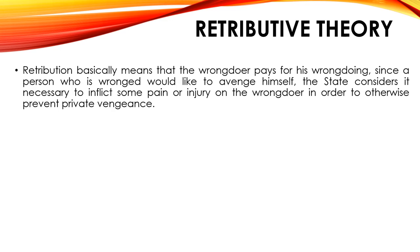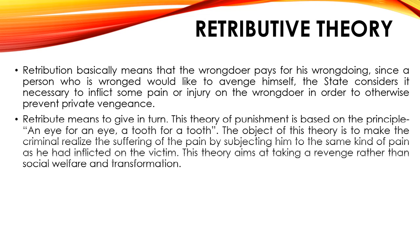The second theory is retributive theory. Retribution basically means that the wrongdoer pays for his wrongdoing. Since a person who is wronged would like to avenge himself, the state considers it necessary to inflict some pain or injury on the wrongdoer in order to otherwise prevent private vengeance. Retribute means to give in turn. This theory of punishment is based on the principle of an eye for an eye, a tooth for a tooth. The object of this theory is to make the criminal realize the suffering of the pain by subjecting him to the same kind of pain as he had inflicted on the victim. This theory aims at taking revenge rather than social welfare and transformation.